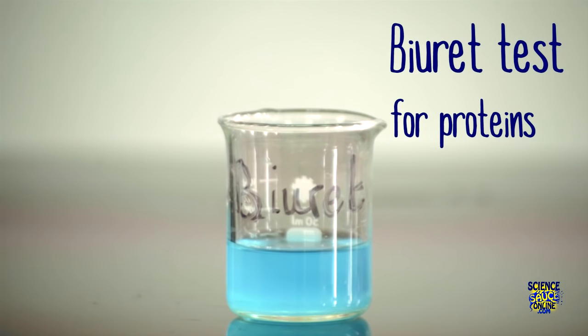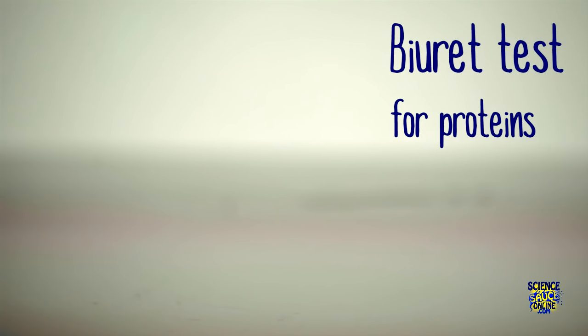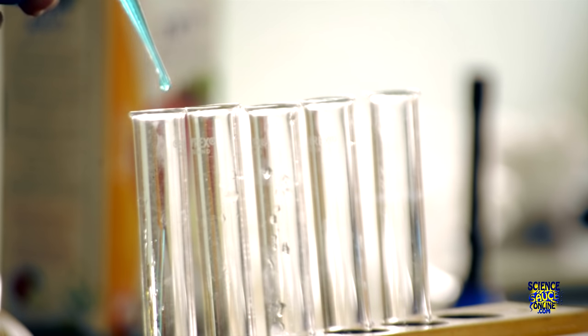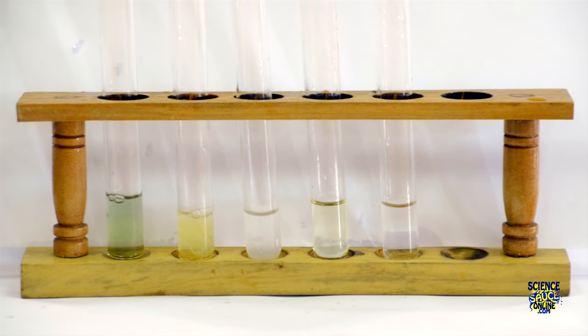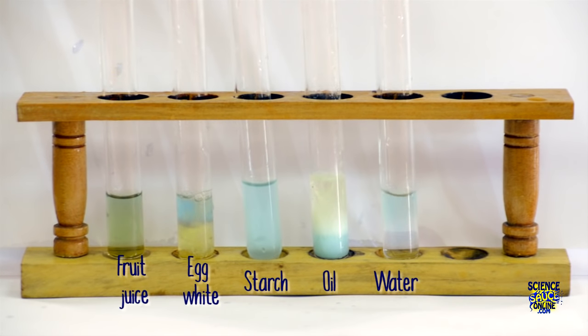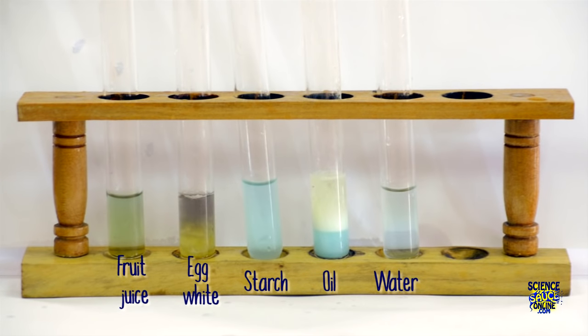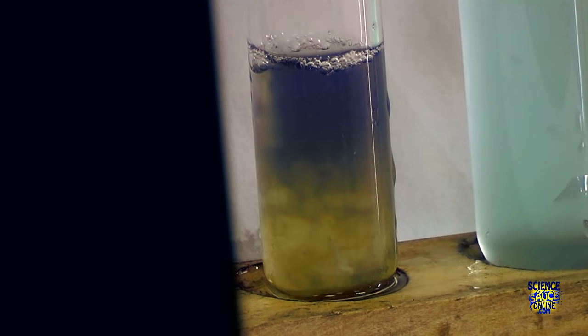Next let's look at the biuret test for the presence of proteins. Take your biuret solution and add it dropwise to each of the samples. If we give it some time for the reaction to take place we can see in the egg white it turns a sort of purplish violet color and that suggests that protein is present.